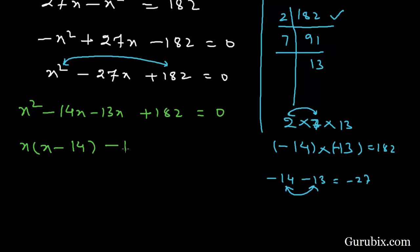Here we shall take minus 13 common, so it will be minus 13(x minus 14) equals to 0. Now we take (x minus 14) common from these two terms. Then we have (x minus 13) in the second bracket.